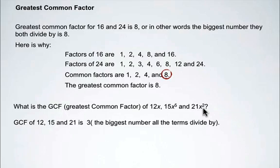The biggest number that all of them, or all of the terms, can be divided by. 3 goes into 12, 3 goes into 15, and 3 goes into 21.